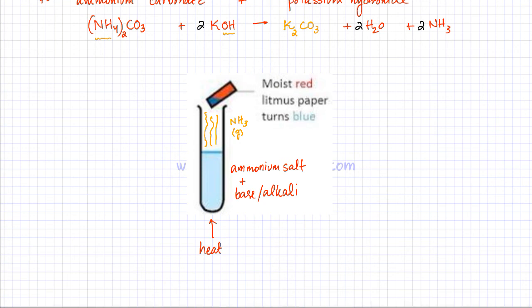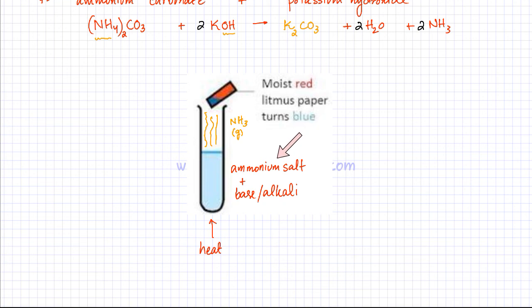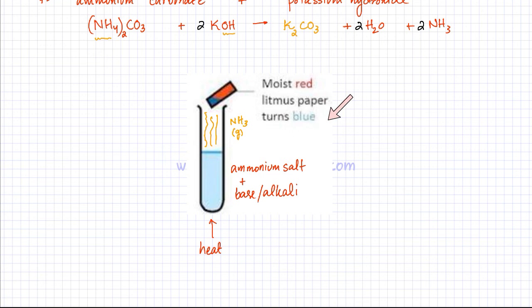This is how you perform this reaction in the school laboratory. It is also used as a test to identify whether a solution contains ammonium ions. Whenever there is a salt containing ammonium ions, mix it with a base, heat it, and test the vapors with moist red litmus paper. If it turns blue, that indicates an ammonium salt was present in the solution.